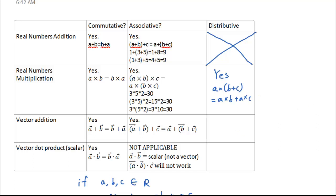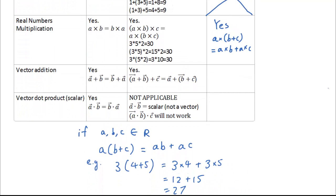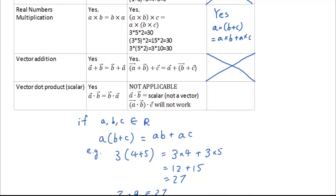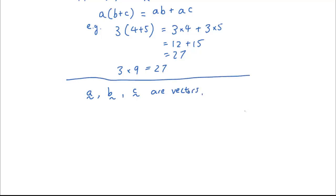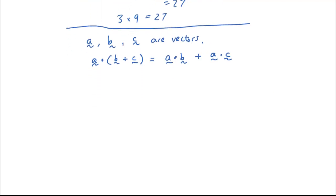Now we're going to talk about how it works with vectors. Let's cross out vector addition because the distributive law is a mixture of vector addition and the dot product. So if we have vector A, vector B, and vector C, what we need to prove is that A dot (B plus C) is equal to A dot B plus A dot C. Hopefully you have seen the dot product videos to understand what I'm talking about.